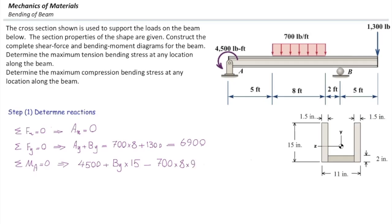The moment produced by 1,300 pounds would be 1,300 multiplied by distance, which is 5 plus 8 plus 2, which is 15, minus 20. From that, BY would be 4,790 pounds, and AY would be 2,110 pounds.